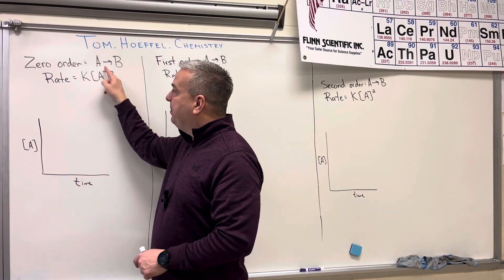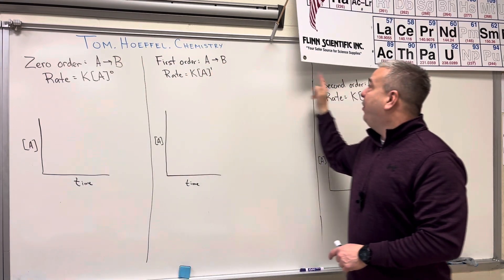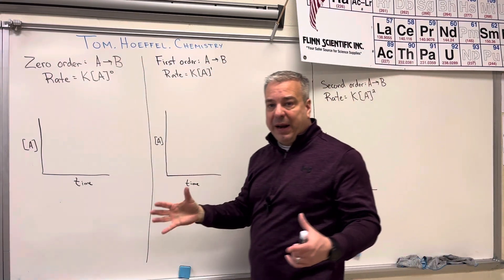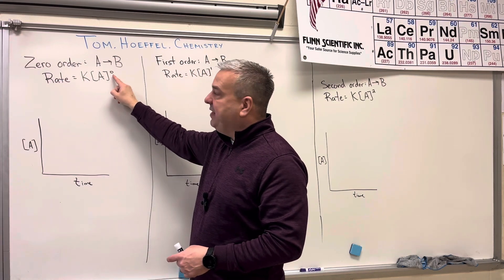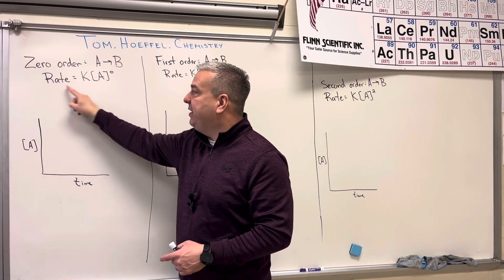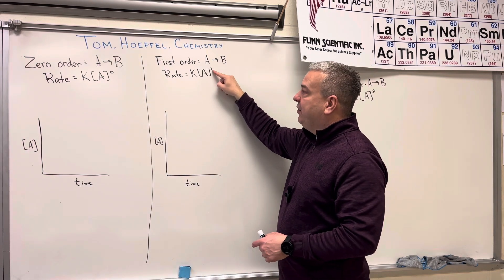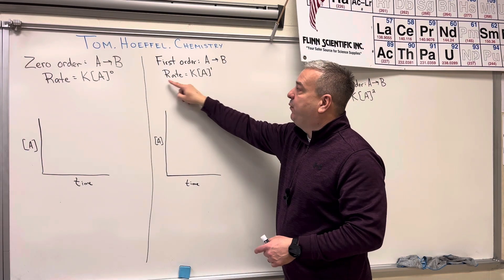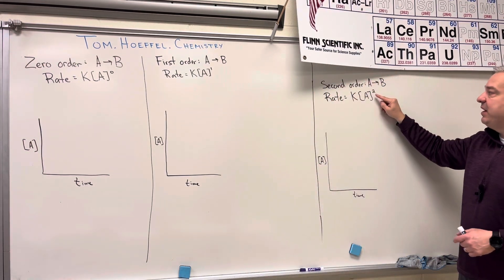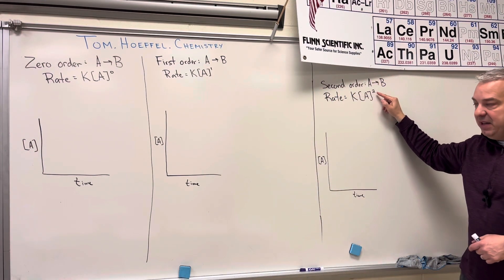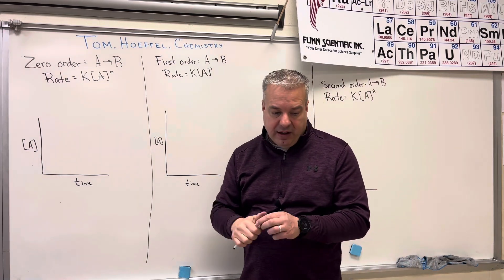Now if we have this chemical reaction, A going to B — and that's going to be the same for all three — their rate orders are going to be different. For zero order kinetics, the exponent is going to be zero in the rate law. For first order kinetics, the exponent is going to be one. And for second order kinetics, the exponent is going to be two. And that's going to change the way some of our graphs look.